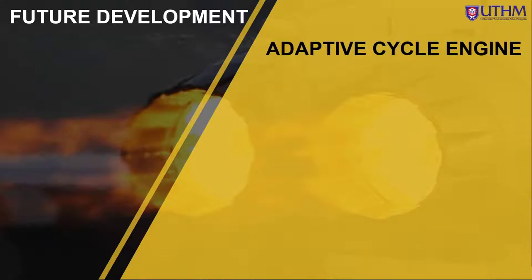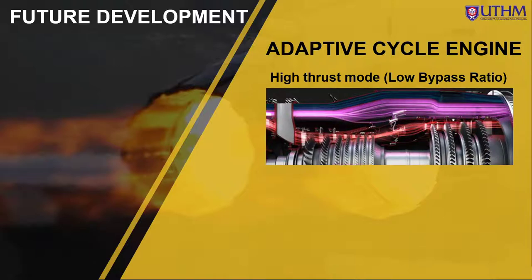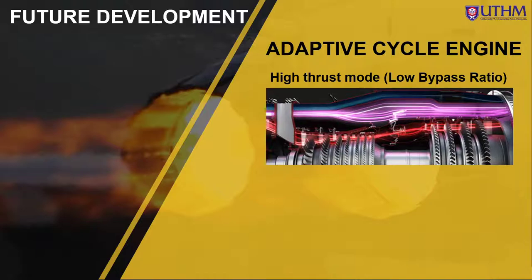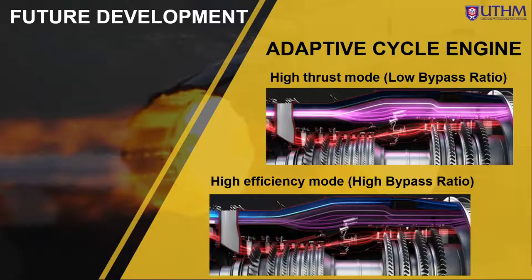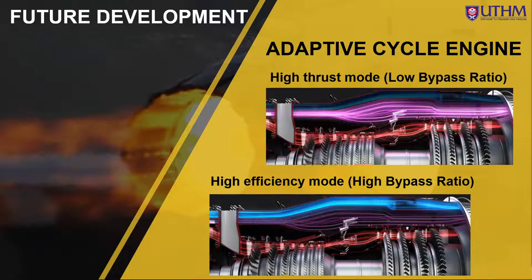The engine's development does not stop there, as future upgrades are planned for both the engine and the aircraft. One planned application is the adaptive cycle engine — adaptive cycle meaning the bypass ratio can be changed by the pilot based on their needs. If maximum thrust is required, such as during combat or aerobatic flight, the bypass ratio can be set to low, sending more airflow through the core. This produces higher thrust but at the expense of efficiency. Conversely, if the pilot requires greater efficiency, the bypass ratio can be set to high, directing more airflow through the bypass, producing less thrust but better fuel efficiency.